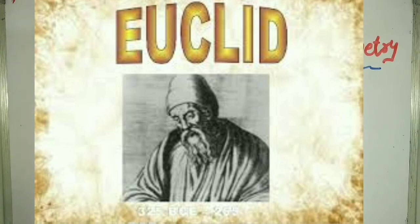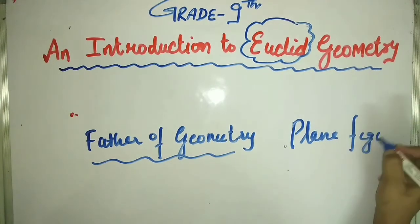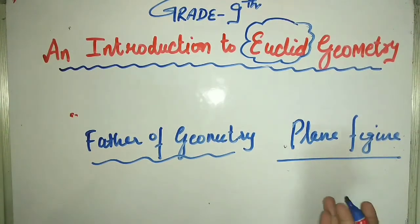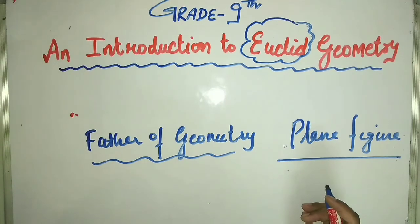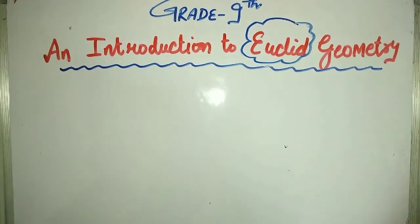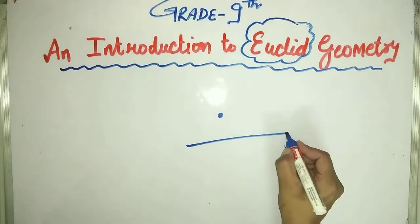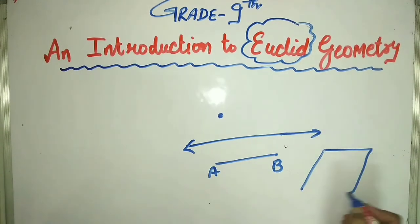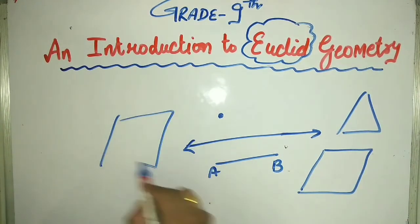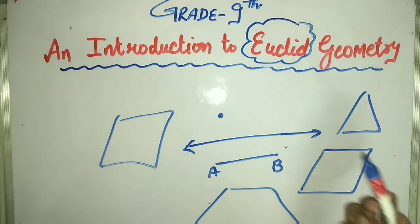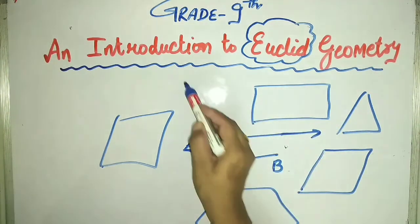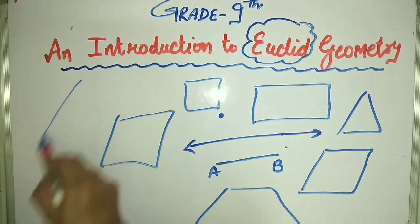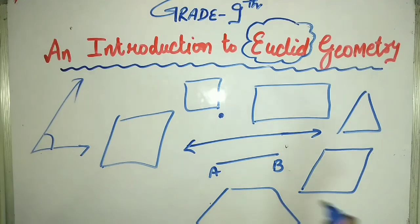Euclid studied plane figures — figures which we can draw on a flat surface. On a flat surface, we can draw many things: a point, a line, a line segment, a flat surface, a triangle, a parallelogram, a trapezium, a rectangle, a square, and also a ray. A ray is where you have an angle. These are all the things we will discuss in Euclid geometry, one by one.